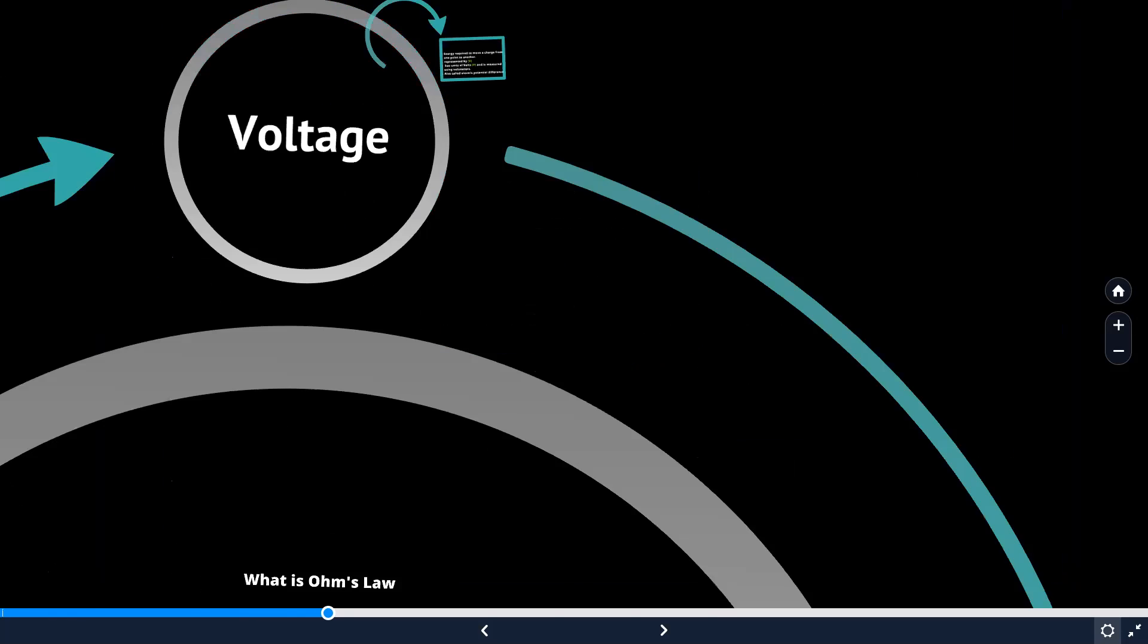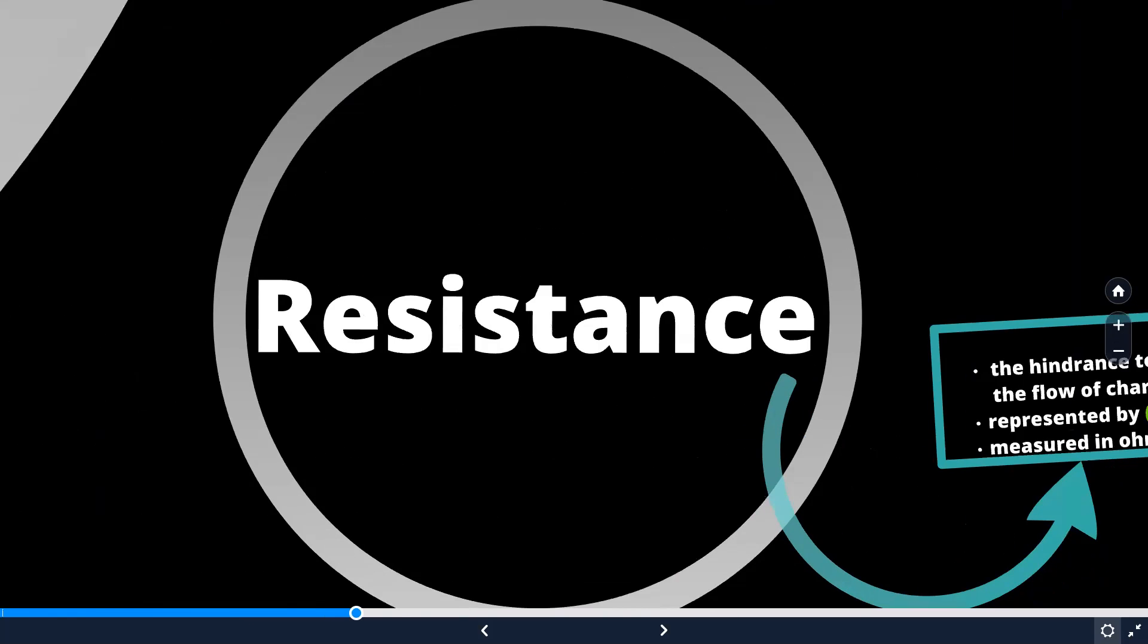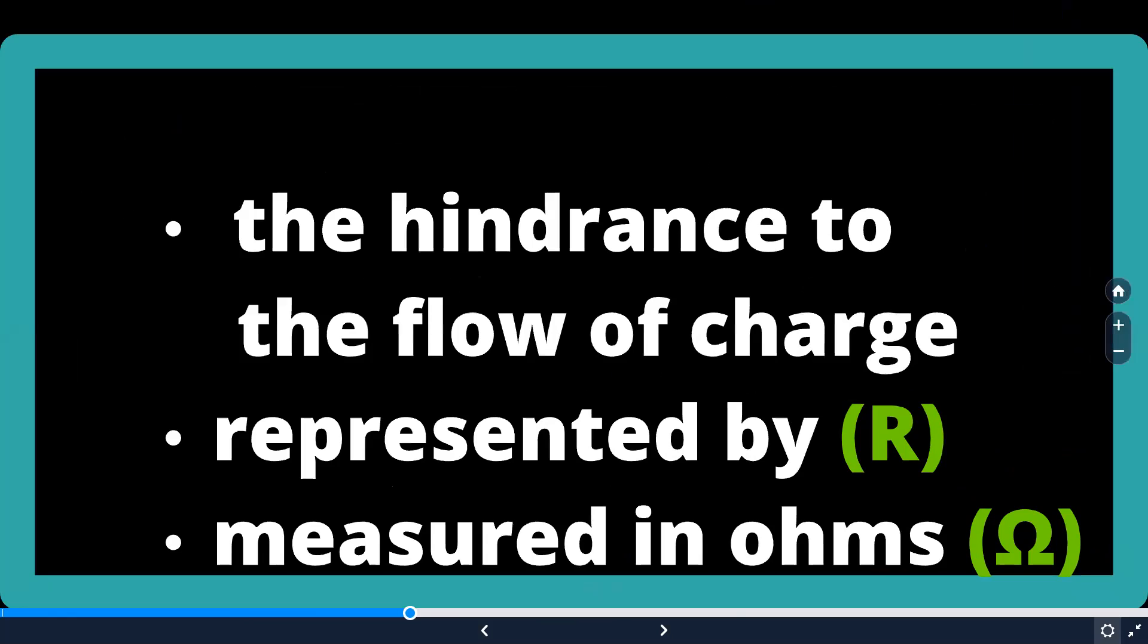Now, what is resistance? Resistance is nothing but the hindrance or the opposition offered against the flow of charge through a metallic conductor. We will be using the symbol R to represent resistance, and it can be measured in the unit's Ohms. We will be using the symbol Omega to represent Ohms.